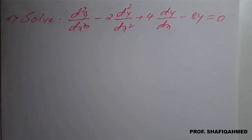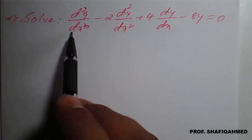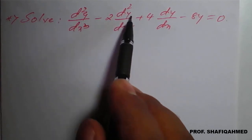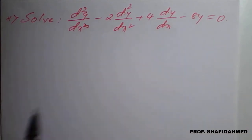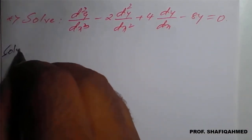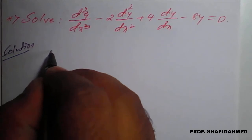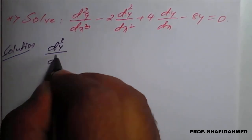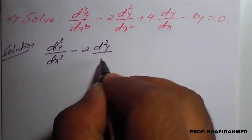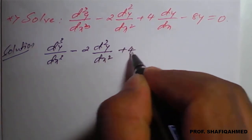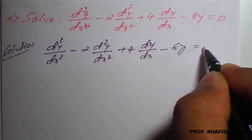We will see the solution of a homogeneous differential equation. The problem is: solve d³y/dx³ minus 2 times d²y/dx² plus 4 times dy/dx minus 8y equal to 0.